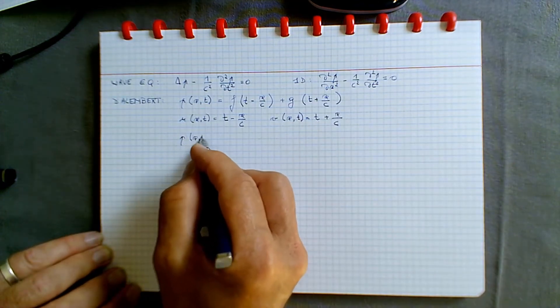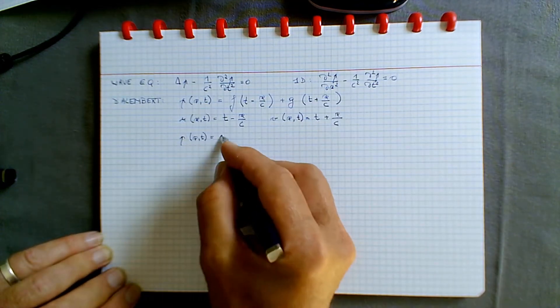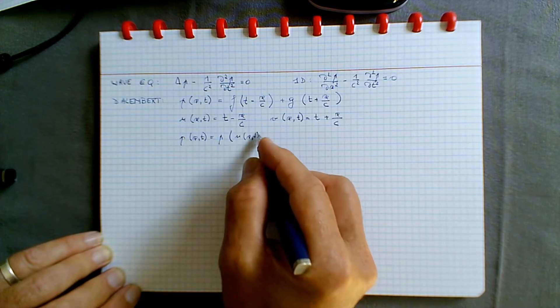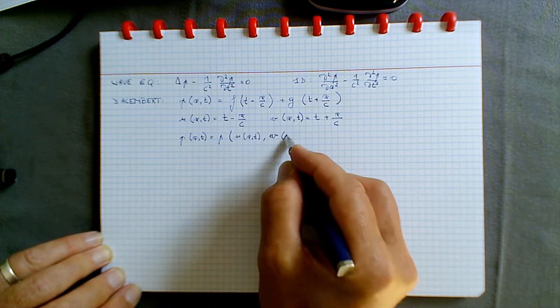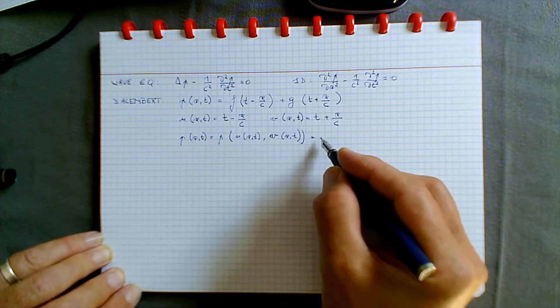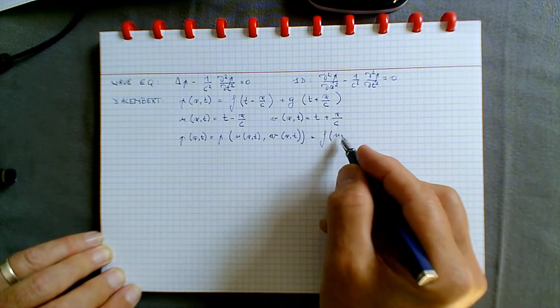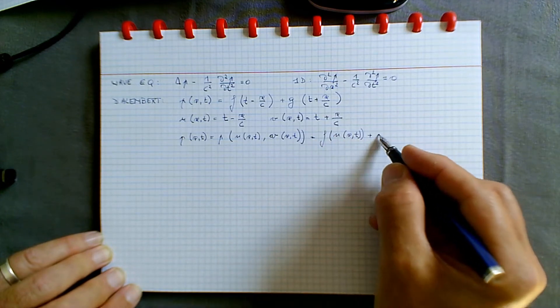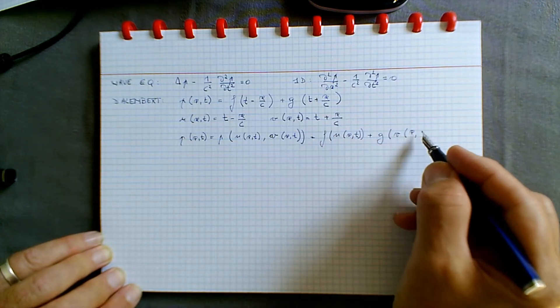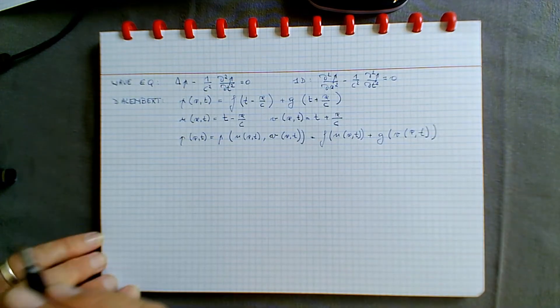We denote u the variable t minus x over c, and v the combined variable t plus x over c, so that the pressure at position x and time t is the sum of f of u — u being a function of x and t — and g of v — v being a function of x and t.